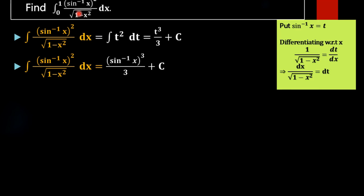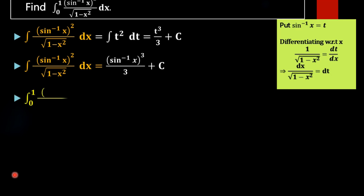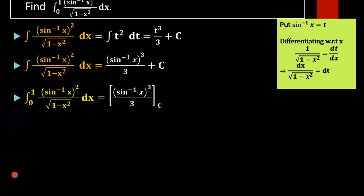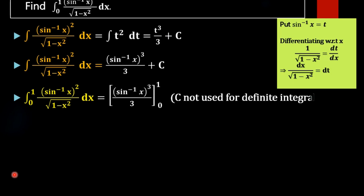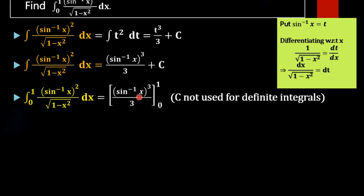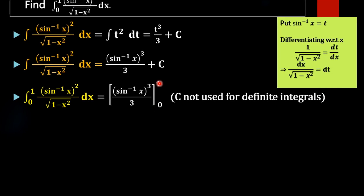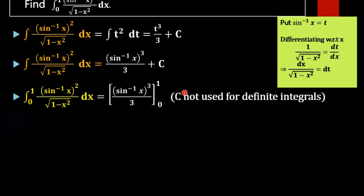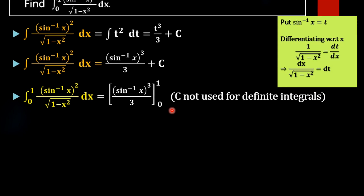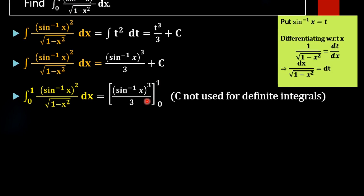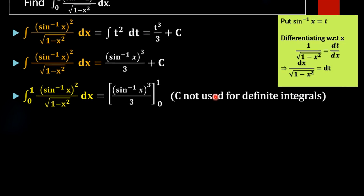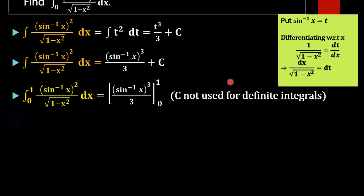Now we need to evaluate the definite integral by applying the limits from 0 to 1. We have the result sin inverse of x whole cubed by 3, and we apply limits from 0 to 1. We are not using c here because in a definite integral, c cancels out automatically after applying limits.